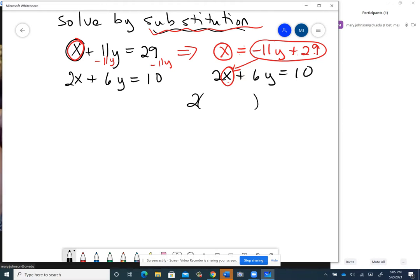So right there where the x used to be, that's where I'm going to put negative 11y plus 29. Now I'm going to keep the rest of the problem. That second equation was 2x plus 6y equals 10. But in place of x, I'm putting negative 11y plus 29.